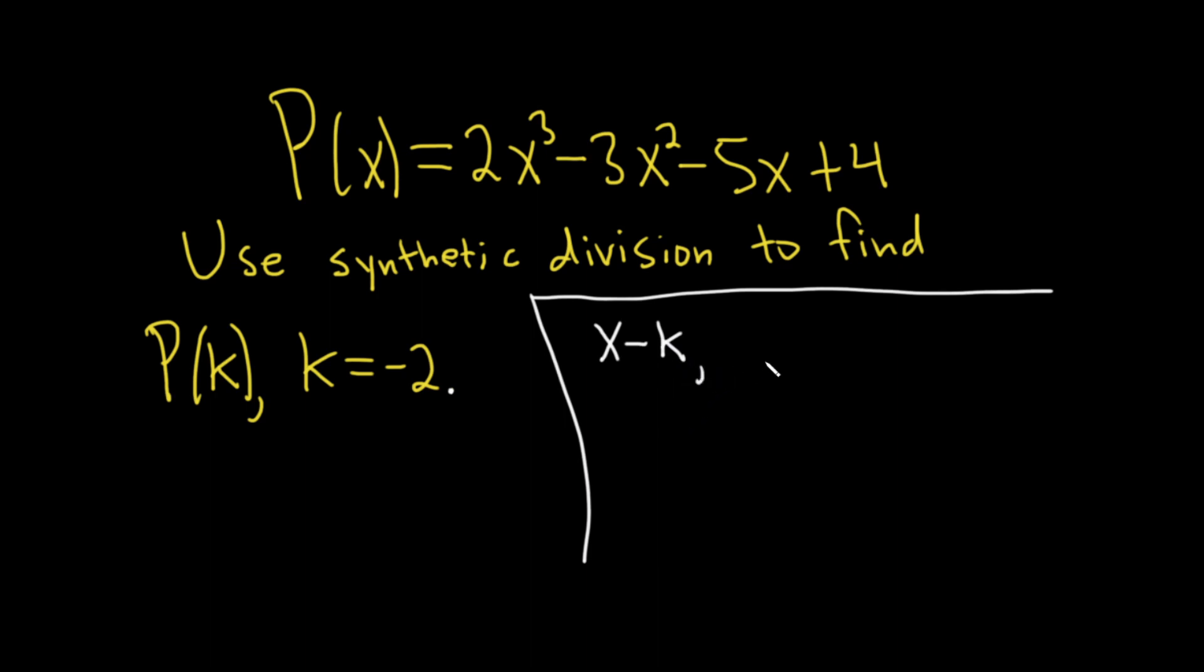But moreover, the remainder when you divide by x minus k is equal to P(k). So basically we're going to divide this polynomial by x minus k, and that will give us the remainder of P(k).